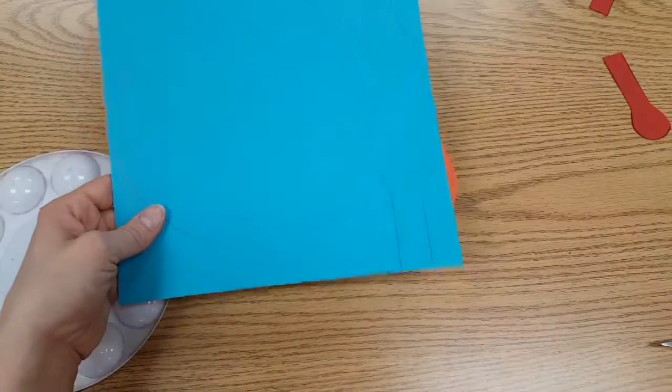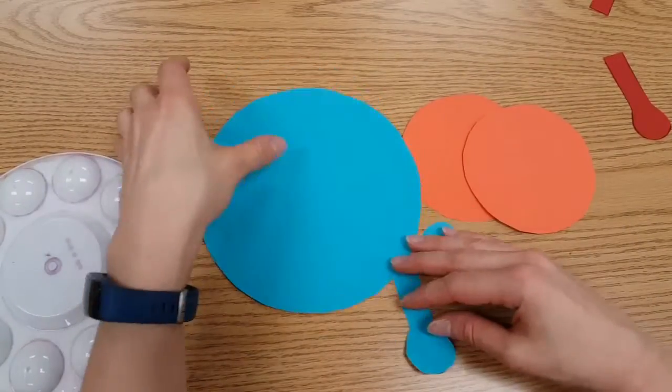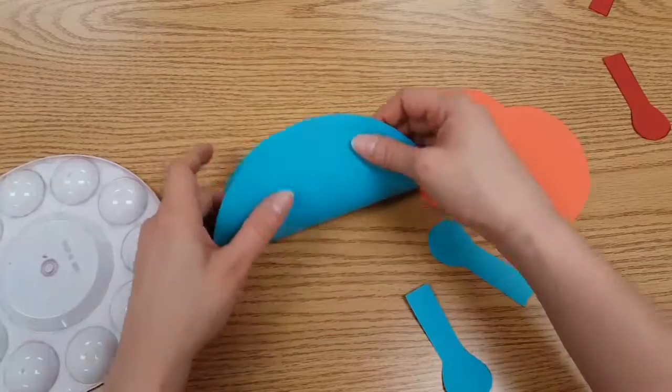You're also going to cut these things out as well. Now you have one giant circle, two smaller circles.